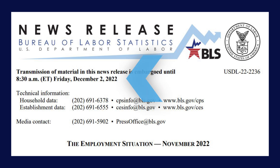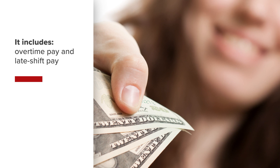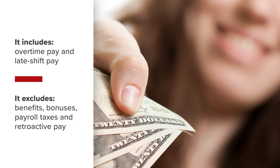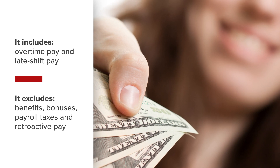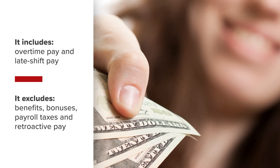The report is issued at 8:30 a.m. Eastern Time on the first Friday of the month and tracks the hourly earnings of all private employees on a gross basis. It includes overtime pay and late-shift pay, but excludes benefits, bonuses, payroll taxes, and retroactive pay. Data is seasonally adjusted and includes month-over-month and year-over-year results.